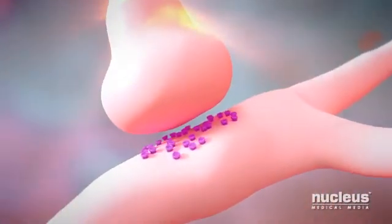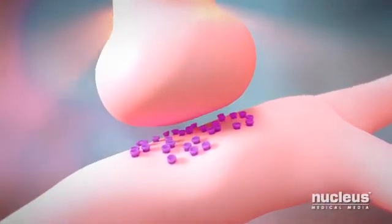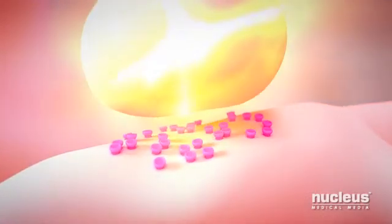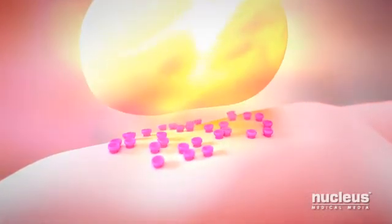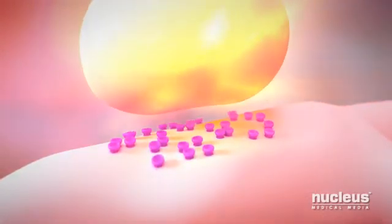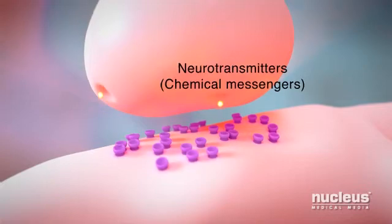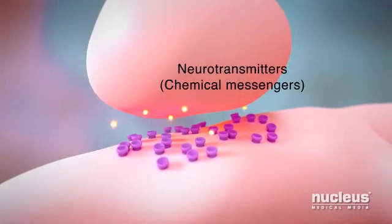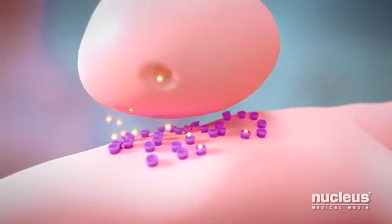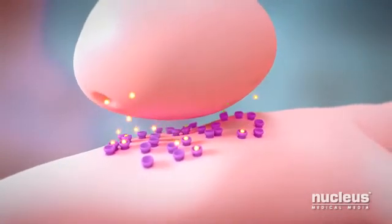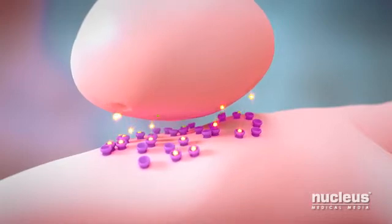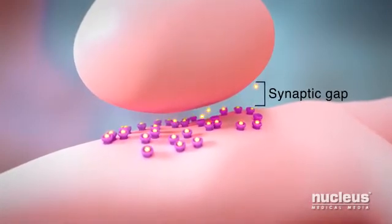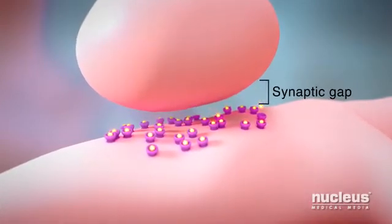Here's a closer look at how a message passes from one neuron to another. At the end of the axon, the impulse causes the neuron to release chemical messengers called neurotransmitters. These chemical messengers move across a tiny space called a synaptic gap and attach to another neuron.